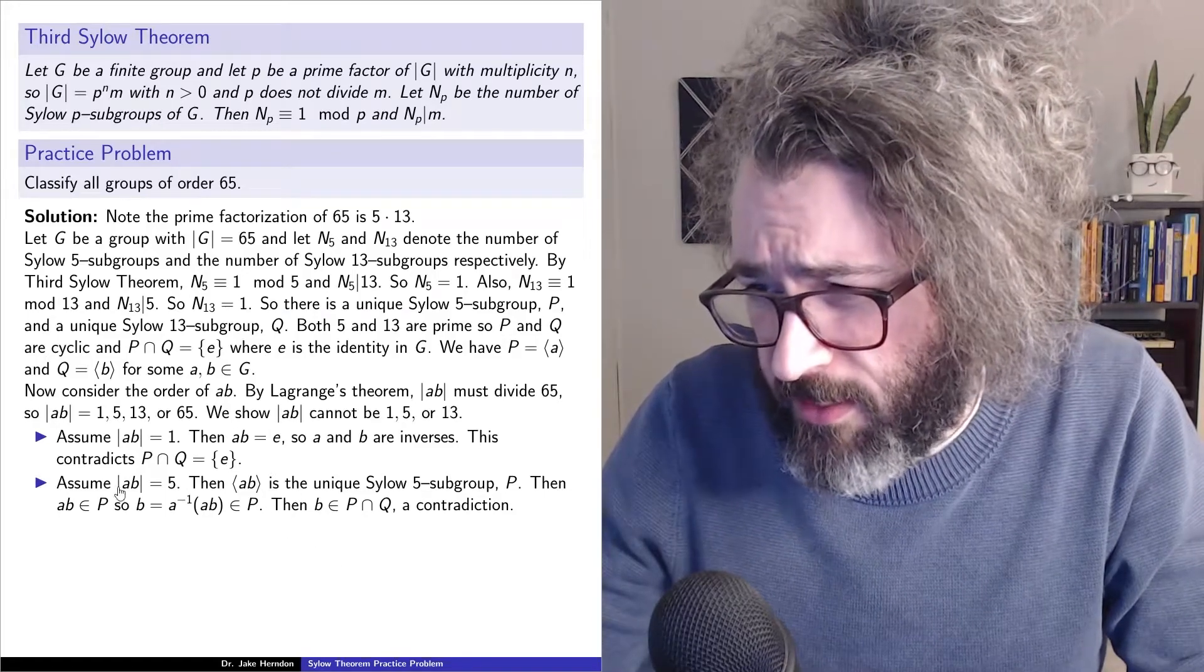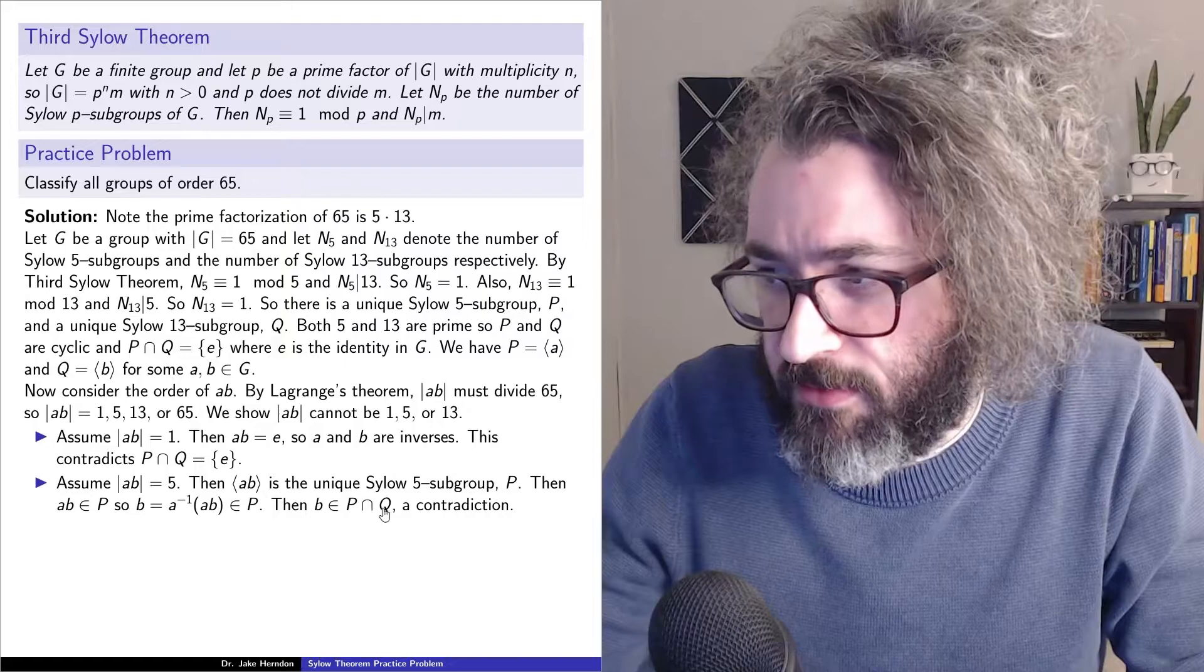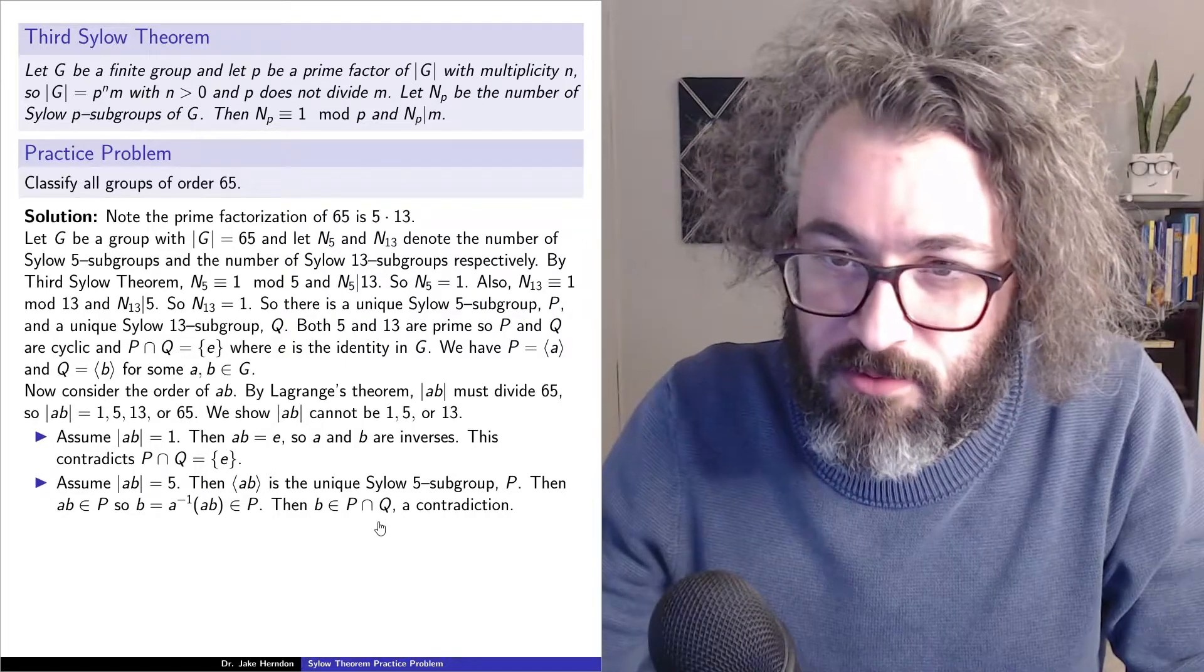So in this case, with this assumption, we get that b is in the intersection of P and Q, and so that's a contradiction.